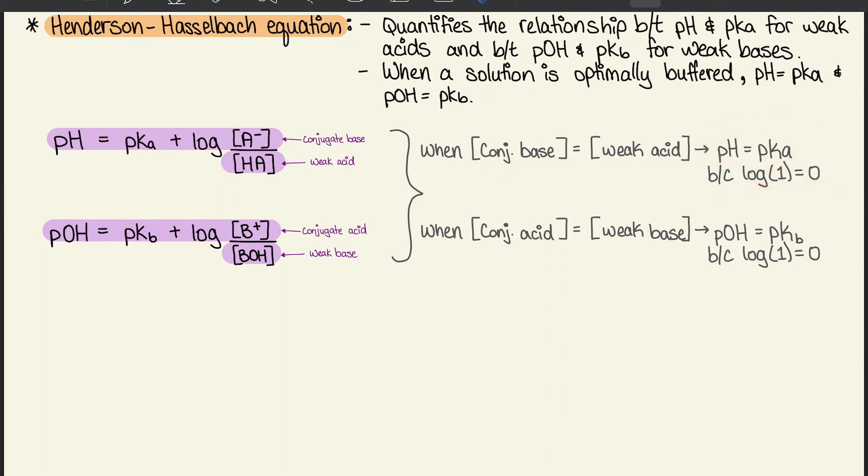When conjugate base equals weak acid, we know that pH equals pKa because log 1 equals 0. We can say the same thing for conjugate acid equals weak base where pOH equals pKb because log of 1 equals 0. That brings us to the end of chapter 10. I hope to see you guys in chapter 11.